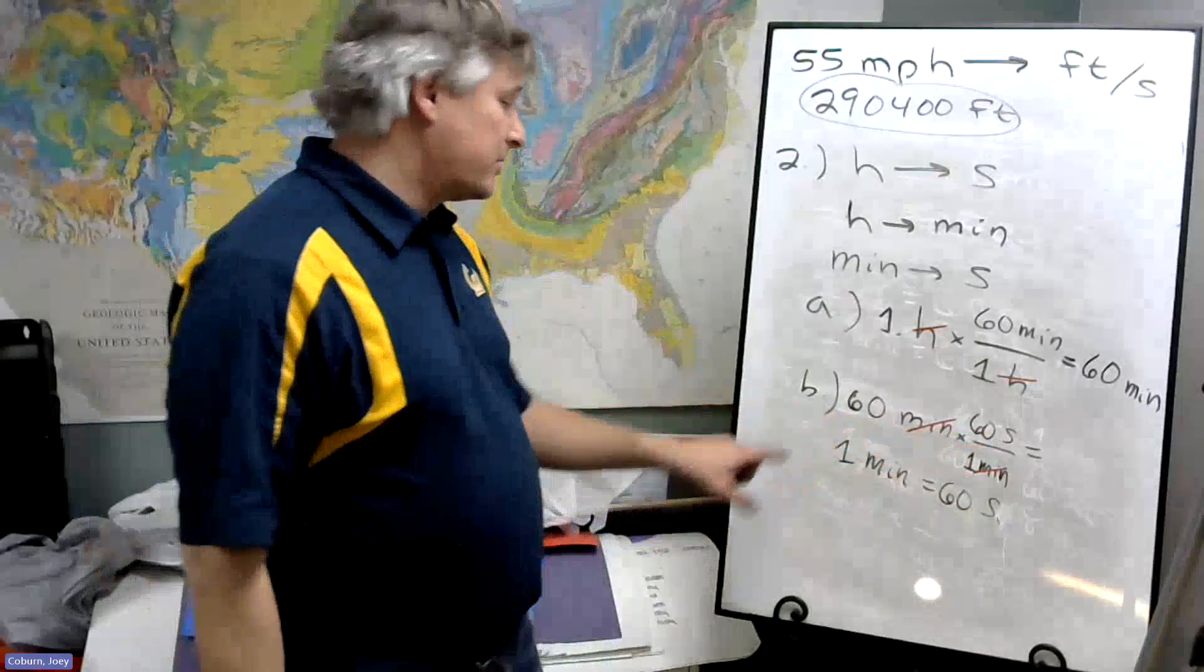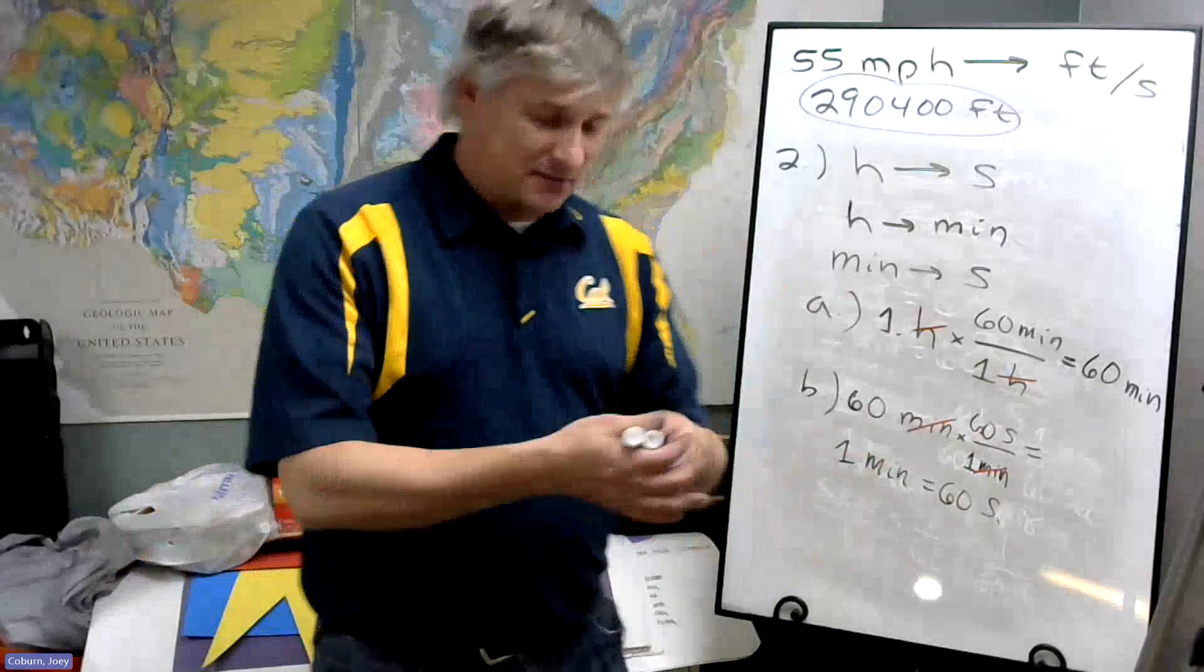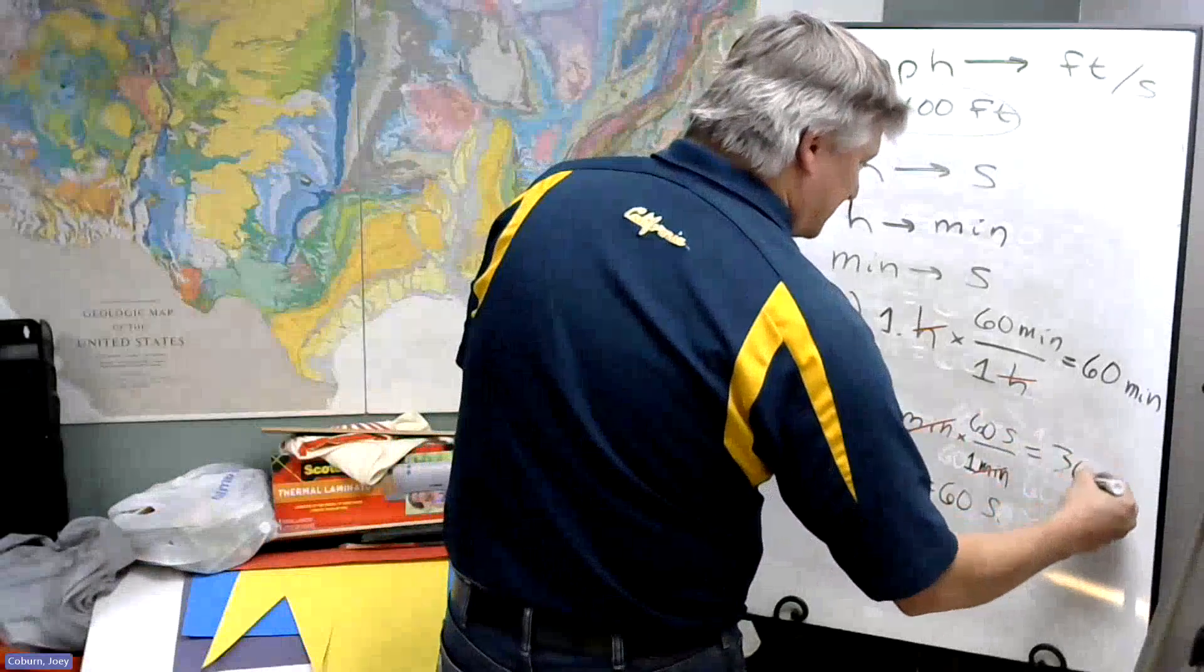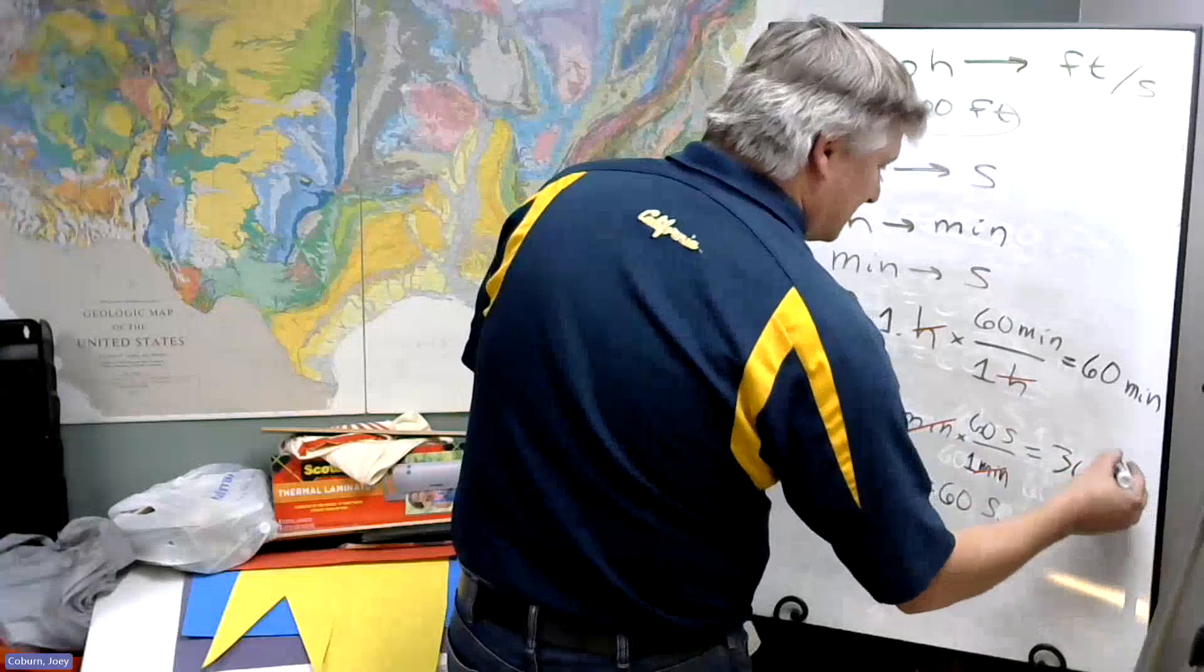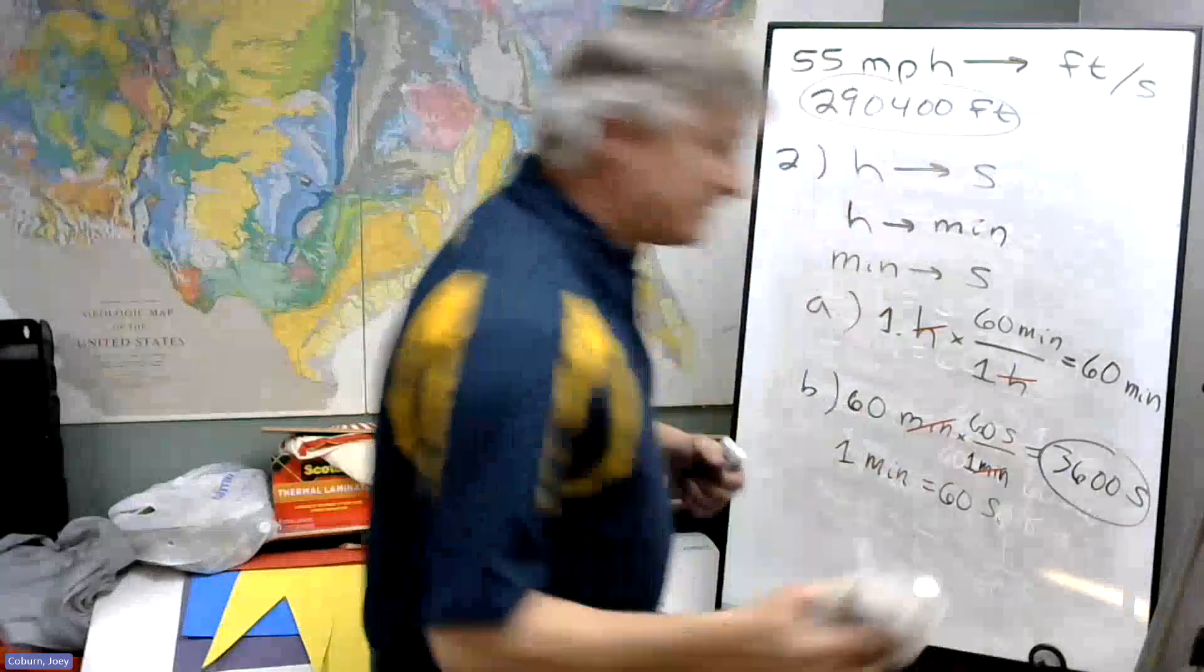And what we're left with is 60 times 60 seconds divided by one. Or in our calculator, we go 60 times 60 divided by one and just tack on the seconds at the end. And what we'll get is 3,600 seconds. And so we've done step two.